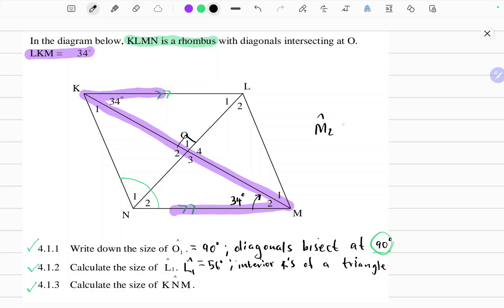Angle M2 equals 34 degrees and the reason is alternate angles. Line segment KL is parallel to line segment NM.